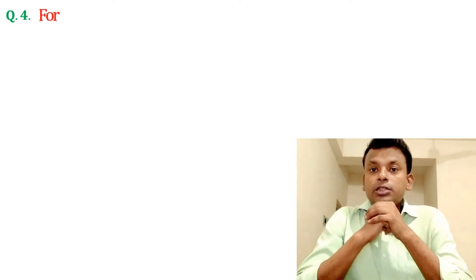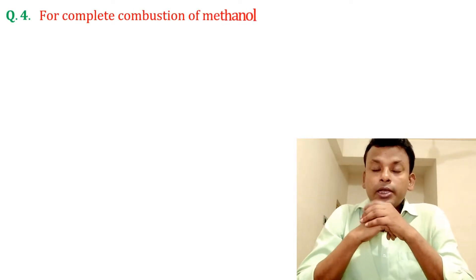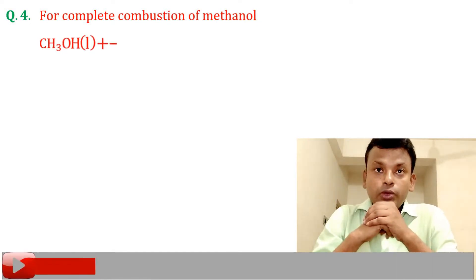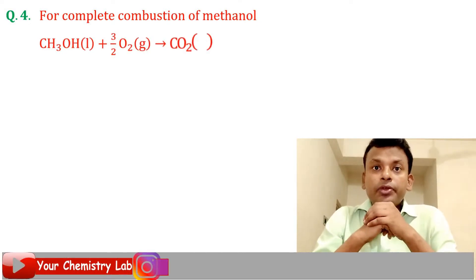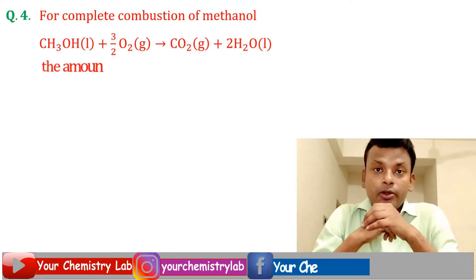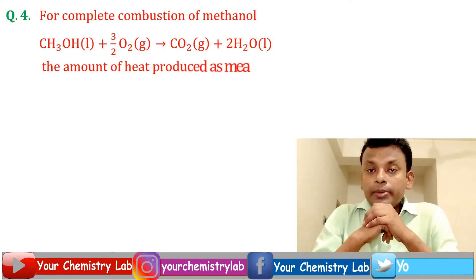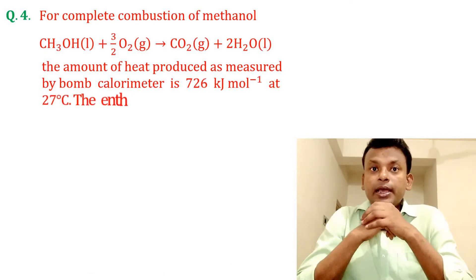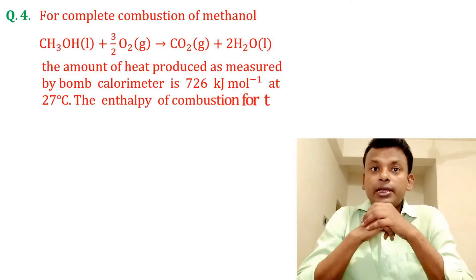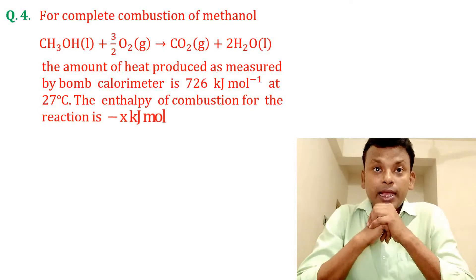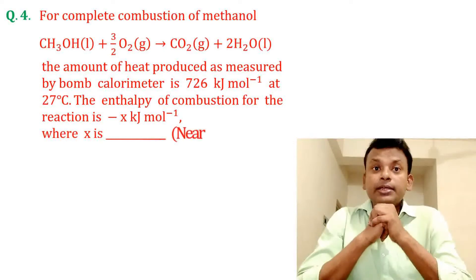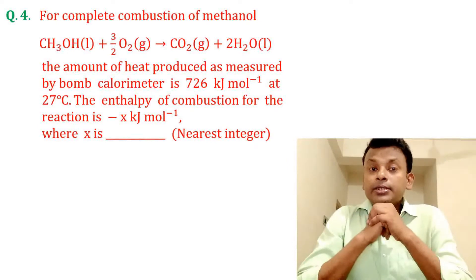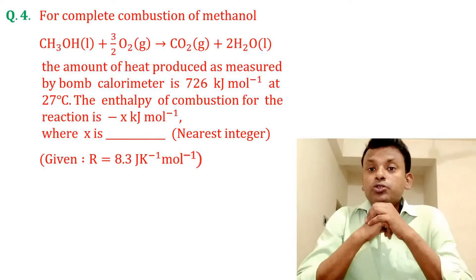Question 4. For complete combustion of methanol: CH₃OH + 3/2 O₂ → CO₂ + 2H₂O. The amount of heat produced as measured by bomb calorimeter is 726 kJ/mol at 27°C. The enthalpy of combustion for the reaction is −x kJ/mol where x is the nearest integer. Given R = 8.3 J/mol·K.